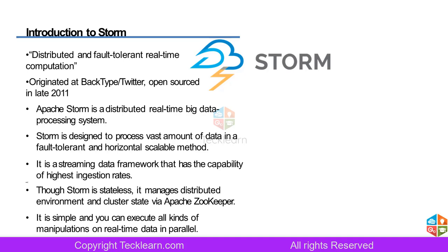Distributed means a huge amount of work is cut into several small pieces and done by multiple machines or servers, which then give back the complete result — that is called distributed computing. Storm also operates this way. Whenever you have a distributed system, you always talk about fault tolerance.